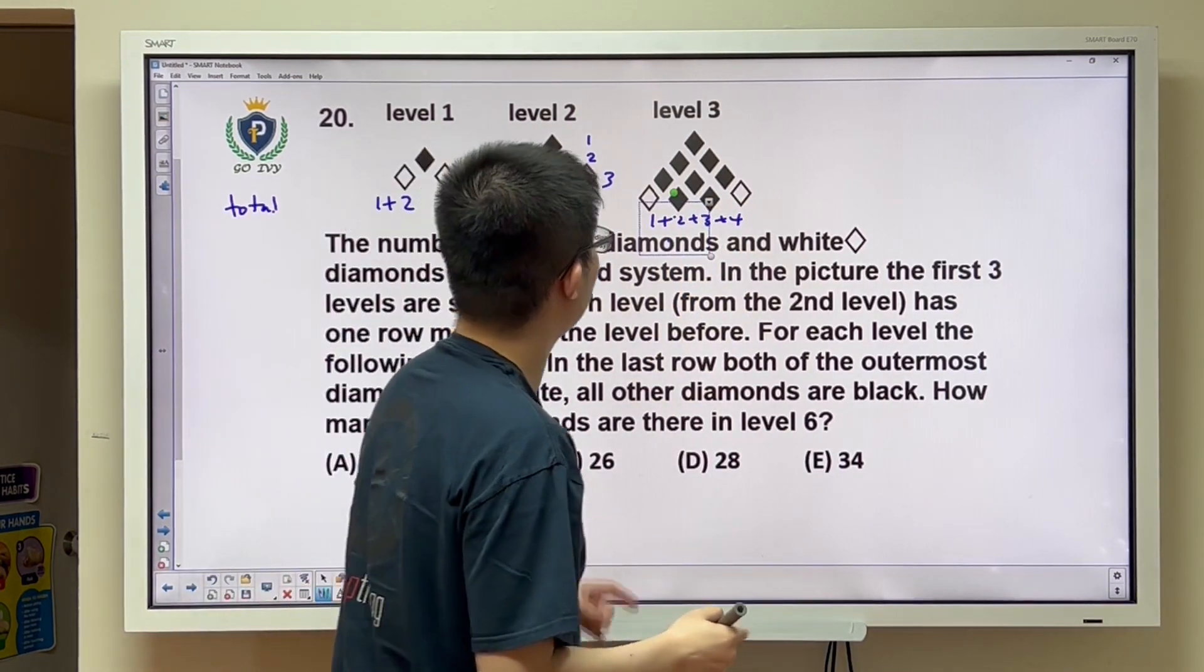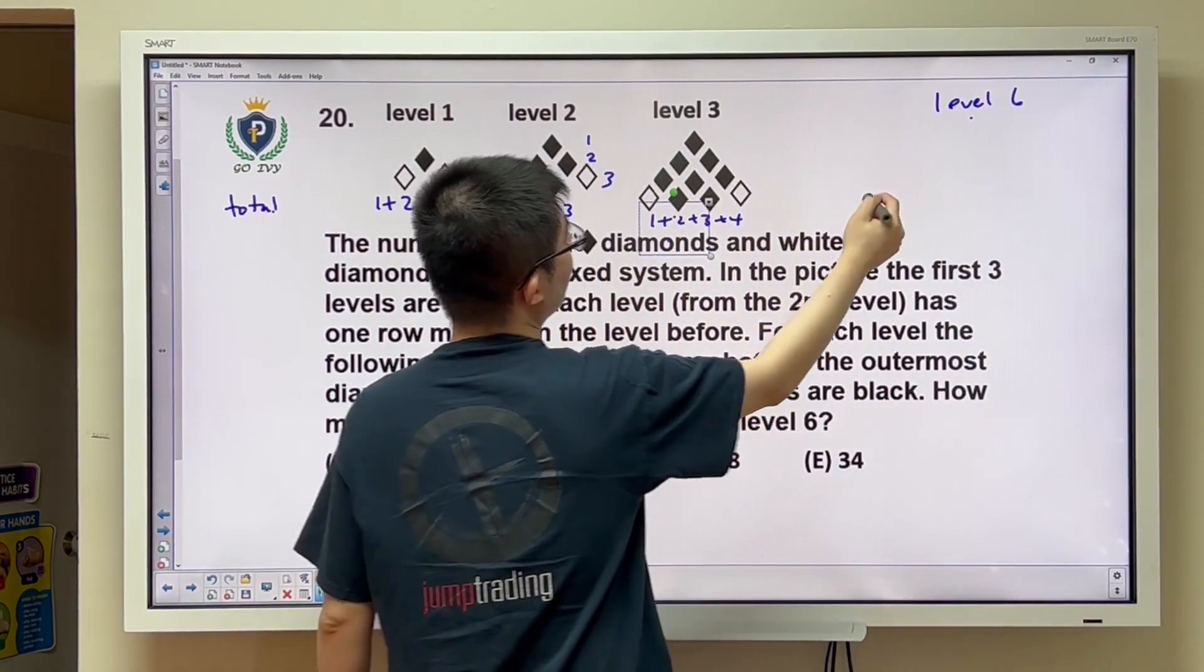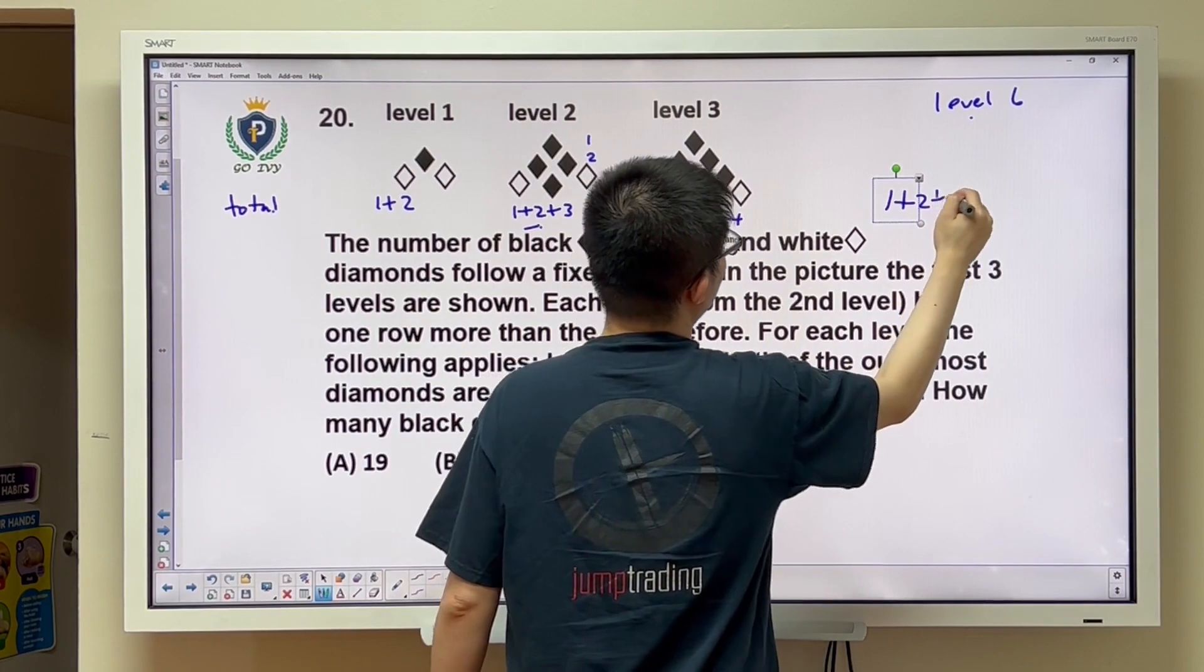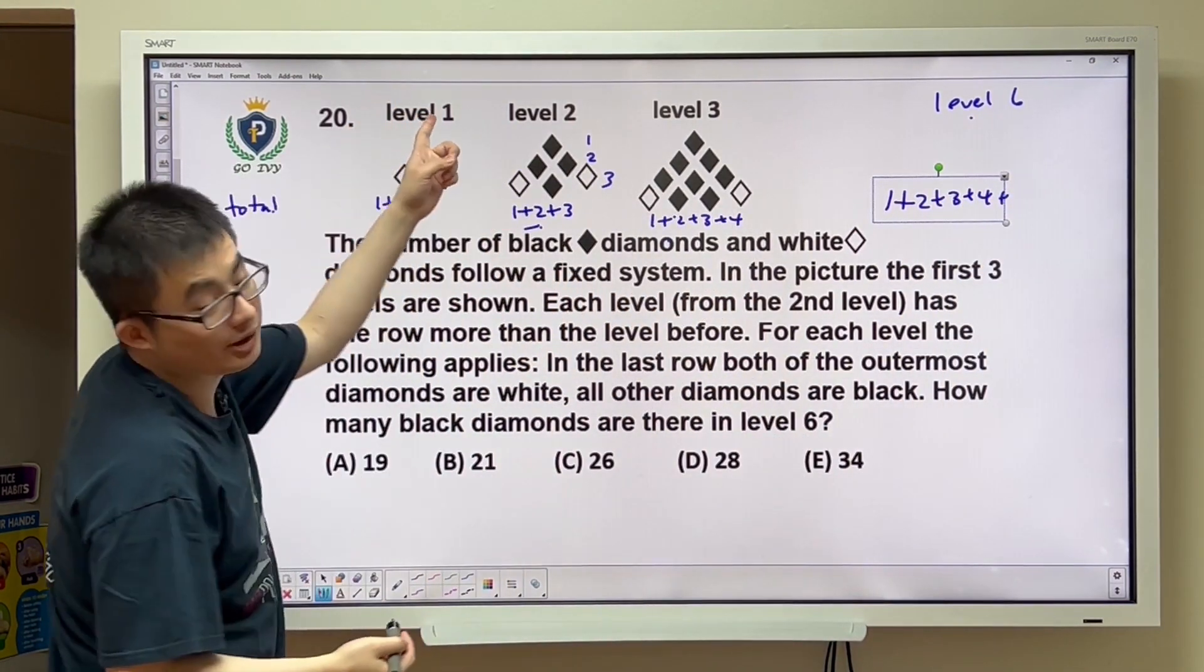Therefore, in level 6, we notice that it's going to be 1 plus 2 plus 3 plus 4 all the way down. Where are we ending at? Well, we notice there's a pattern.